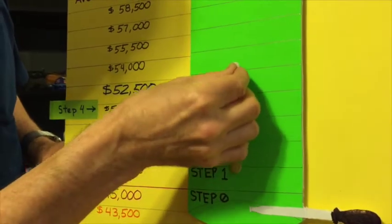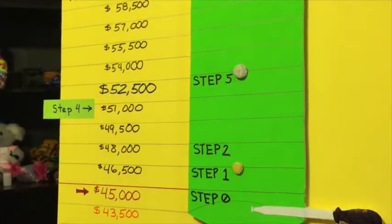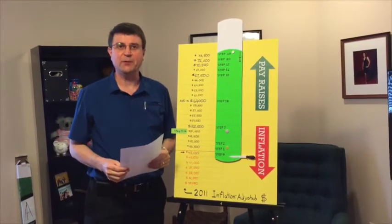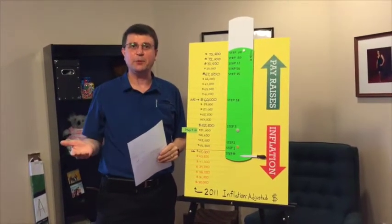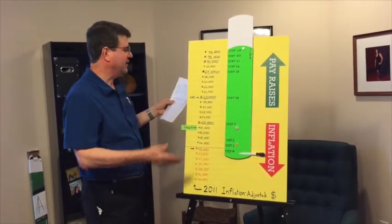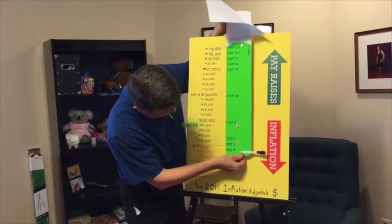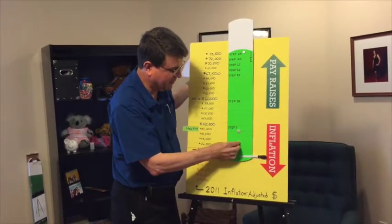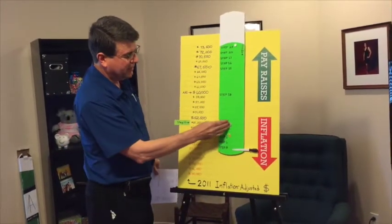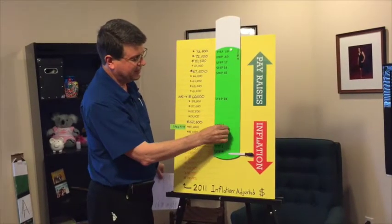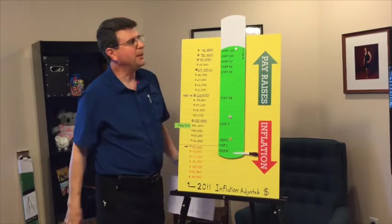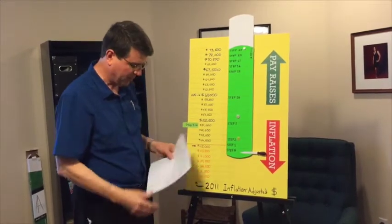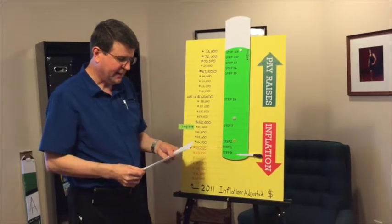Even though the whole cylinder sank, a year later the teacher moves up to step one, so they're still better off than the year before. In 2012-13, the inflation rate was 1.7% and we received a 1% raise, so we were seven-tenths of a percent behind inflation — losing about four hundred and twenty dollars more on average. We move the cylinder down another four hundred and twenty dollars, and the bubble moves up one more step.